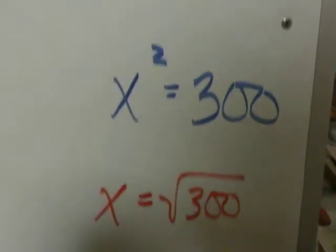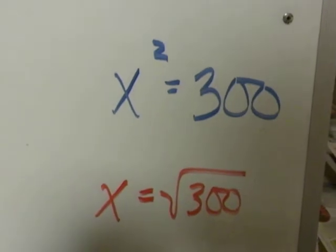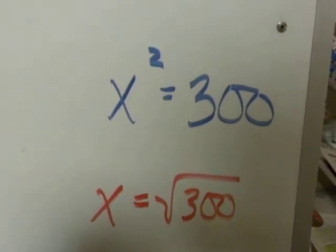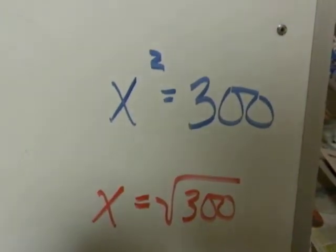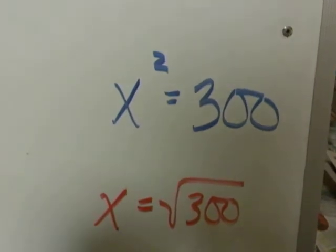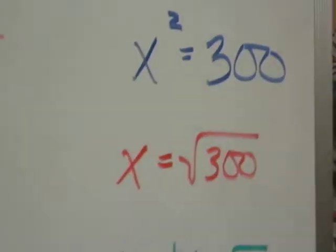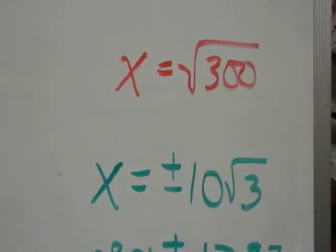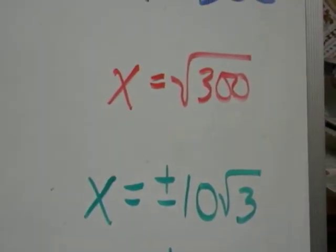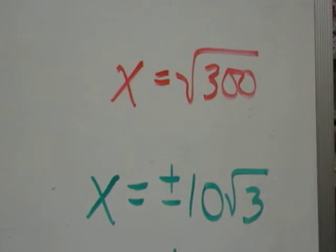Get rid of the square by taking the square root. But because it was an x squared, it's not just the square root of 300. It's really plus or minus that square root. Well, let's break it down as the product of perfect squares first. 300 divides by 100 three times. So x could be the positive or negative ten radical three.